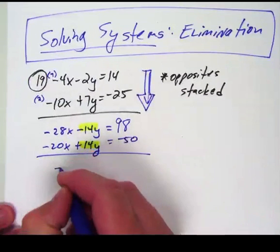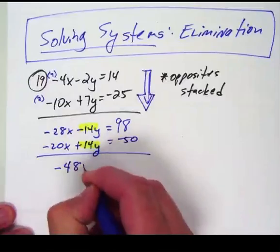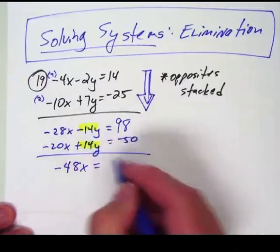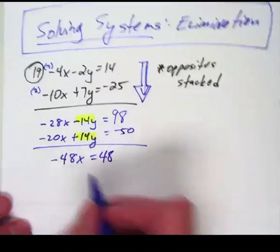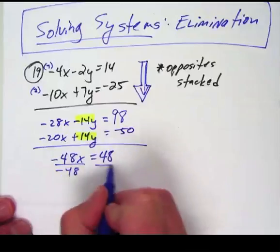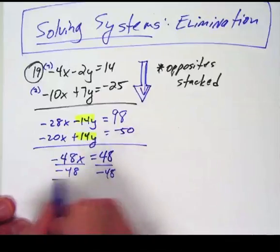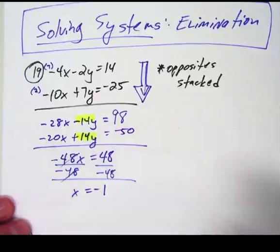So this is going to give me negative 48x equals, and then 98 take away 50 is 48. And then I divide both sides by negative 48 because this is multiply, to get rid of multiply we divide, and x equals negative 1.